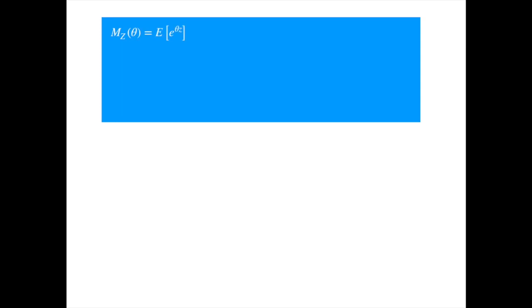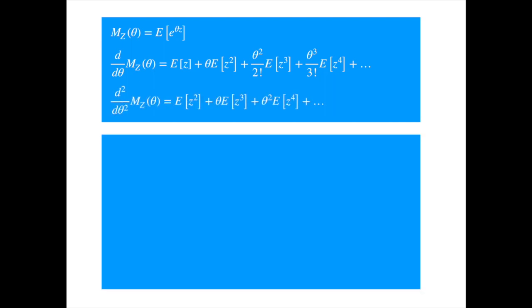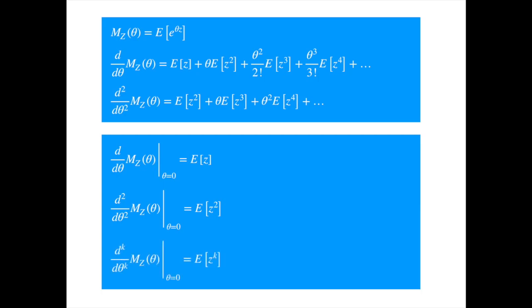Let's summarize the discussion so far. We started with the definition of the moment-generating function. We then expanded the exponential, enabling us to establish the link between the derivatives of the moment-generating function and the moments. Setting theta equal to zero in the first derivative gave us the formula for the first moment. Setting theta equal to zero in the second derivative gave us the formula for the second moment. Generalizing, setting theta equal to zero in the kth derivative gives us the formula for the kth moment.